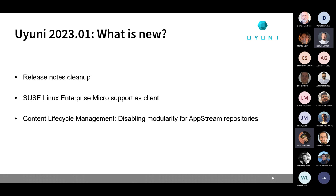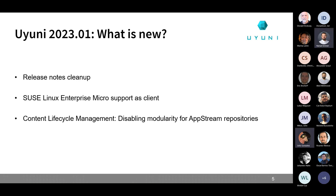For those not familiar, SUSE Linux Enterprise Micro is a transactional system — the concept is very similar to openSUSE MicroOS. We are also introducing in the content lifecycle management the ability to disable modularity for upstream repositories. This is very important for Red Hat 9 and clones such as Rocky Linux 9, Alma Linux, etc.